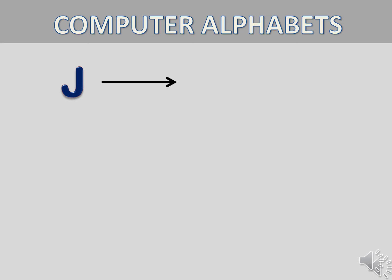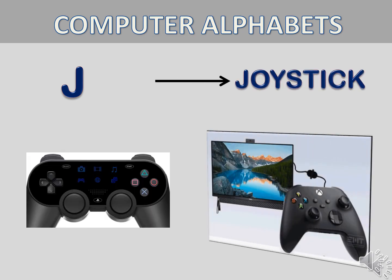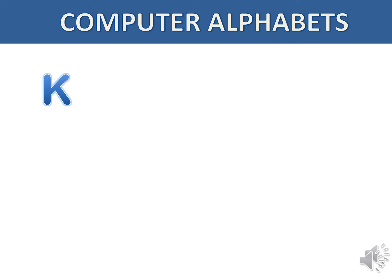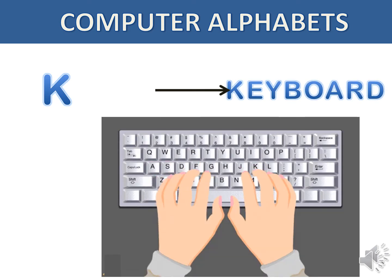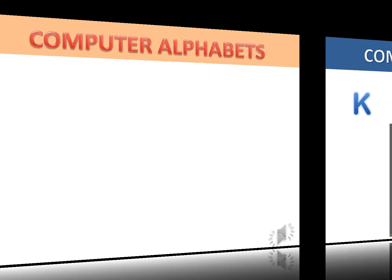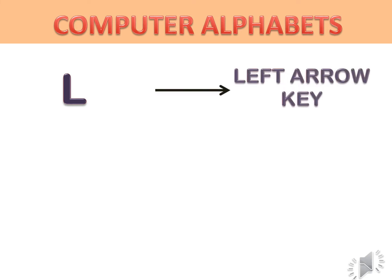J — Joystick. K — Keyboard. L — Left Arrow Key.